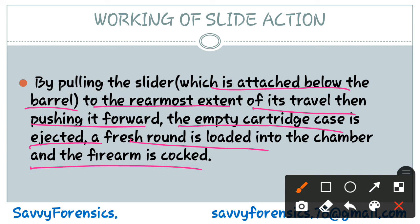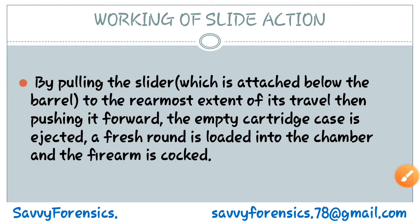So the work of the slide action is: the empty cartridge case is removed and a fresh cartridge is placed in the chamber simultaneously, and the firearm is placed in the cocked position. After that, when you press the trigger, it hits the hammer, which hits the firing pin, and the firing pin strikes the primer cup of the cartridge. That is the complete slide action process. Next time we will talk about deck action.